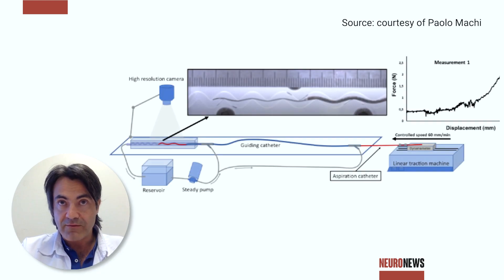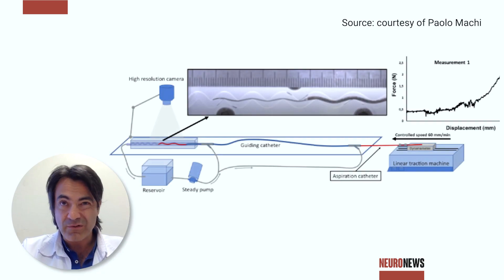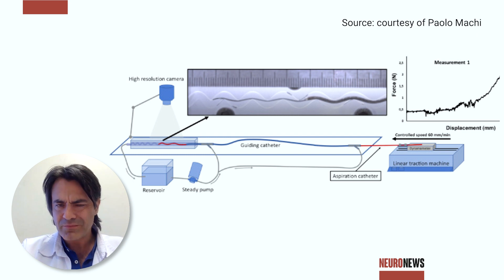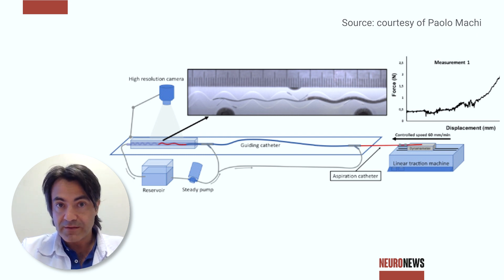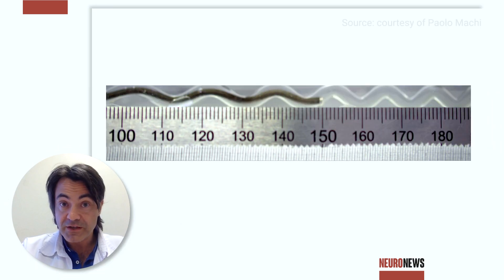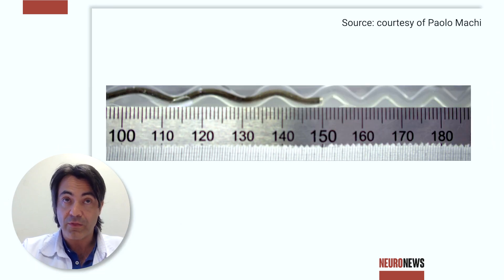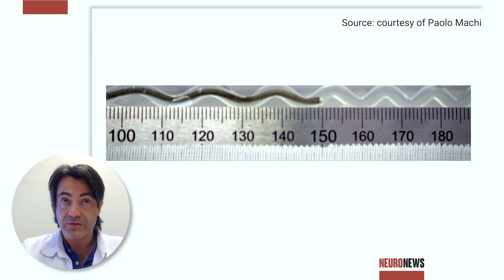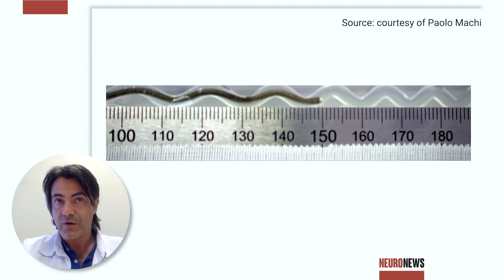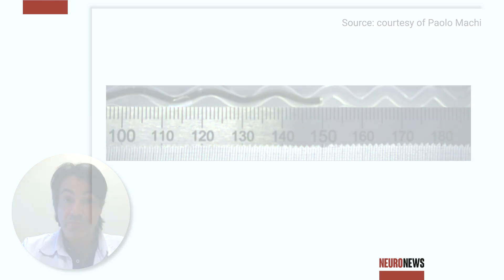Trackability means that we have conceived and developed specific vascular phantoms with specific characteristics, actually challenging the trackability of the aspiration catheters. We use a tensile machine, for example, to push the catheter through the phantoms, measuring the distance covered by the catheter and the force needed to push it through that distance.